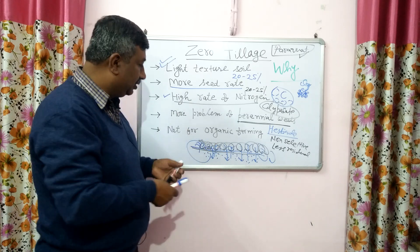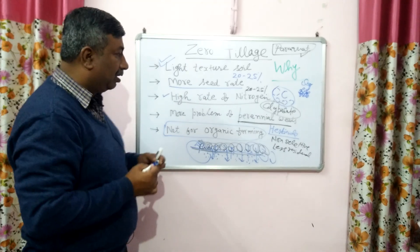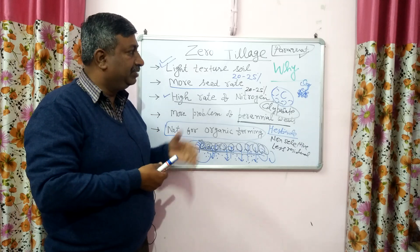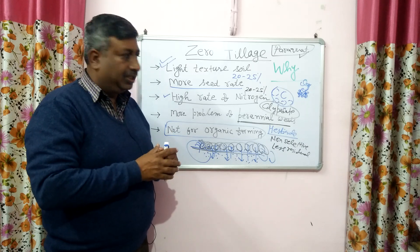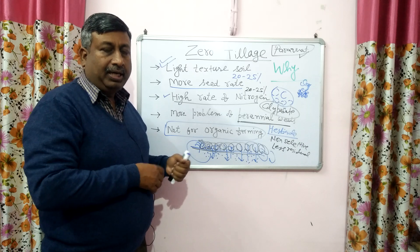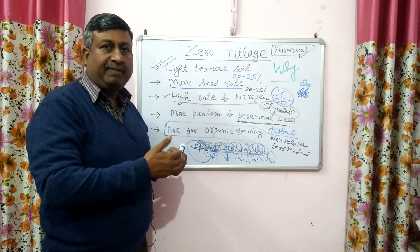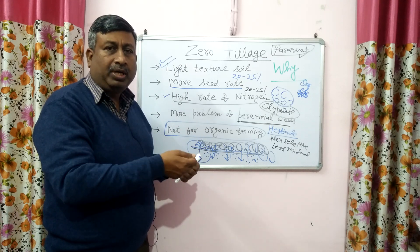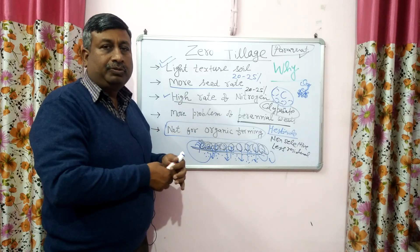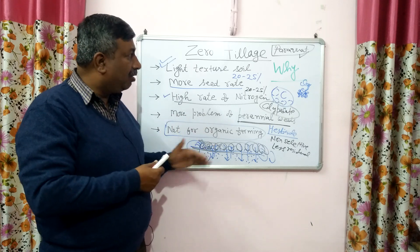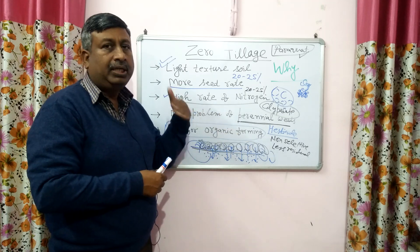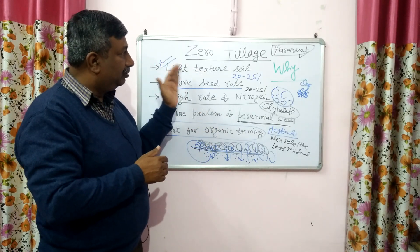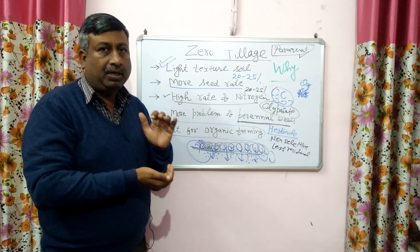Since herbicides and chemicals are used in zero tillage for weed control, it is not adopted in organic farming or organic agriculture. Zero tillage adoption is very difficult in organic farming because if we use zero tillage in organic farming, it is very difficult to control the weeds — only hand removal and hand pulling can be adopted, requiring huge labor. Perennial weed population will increase and more human labor, time, and money are required, making it uneconomical.